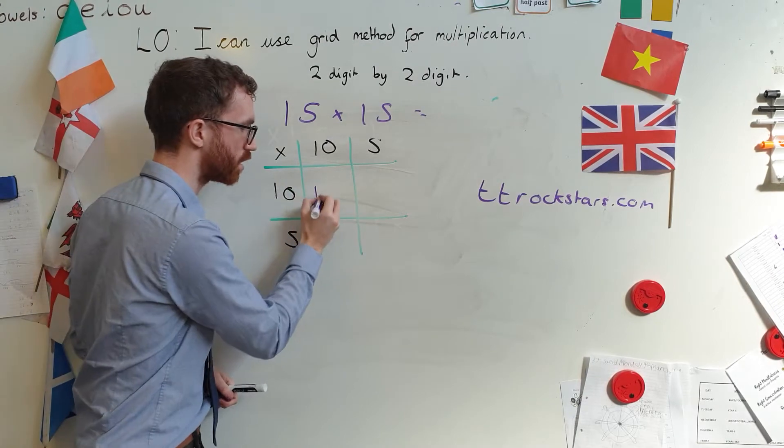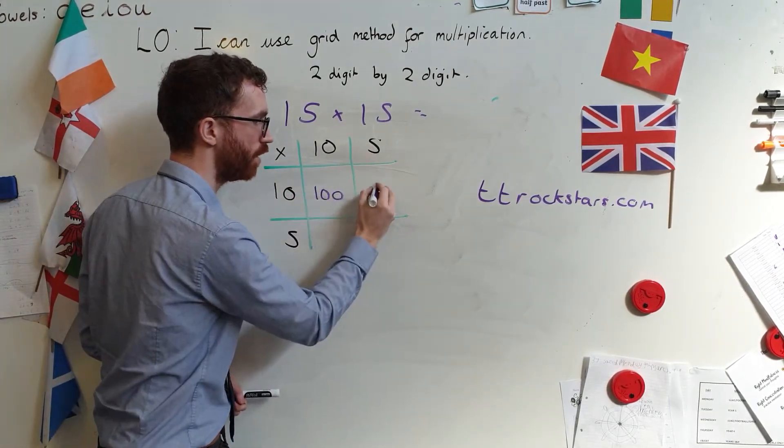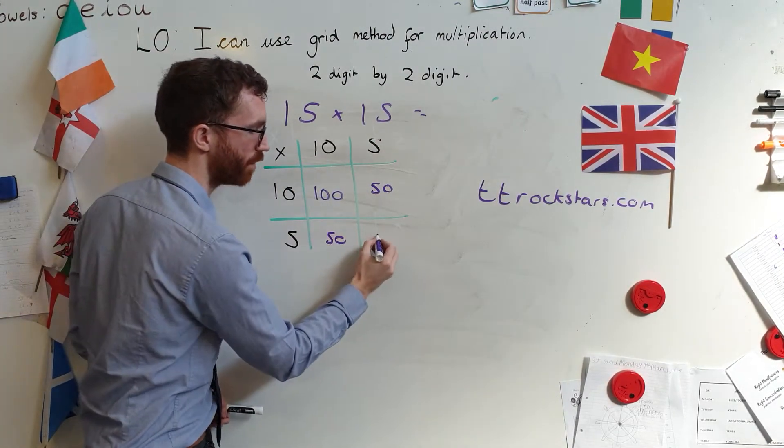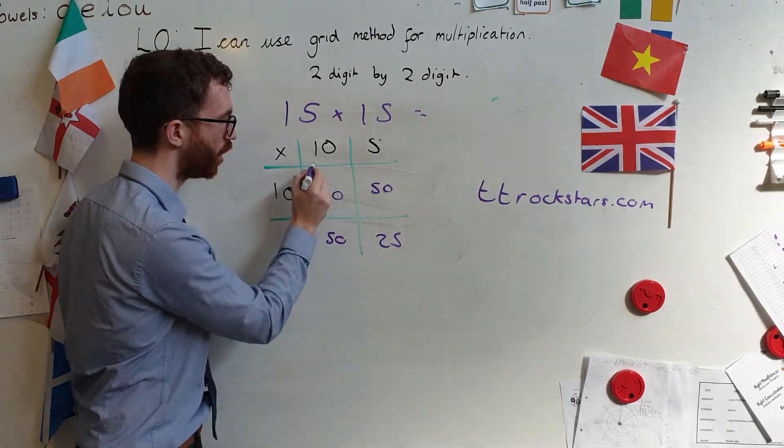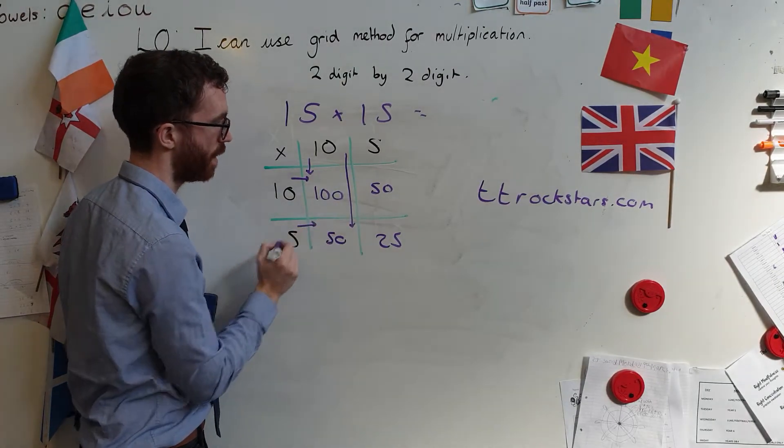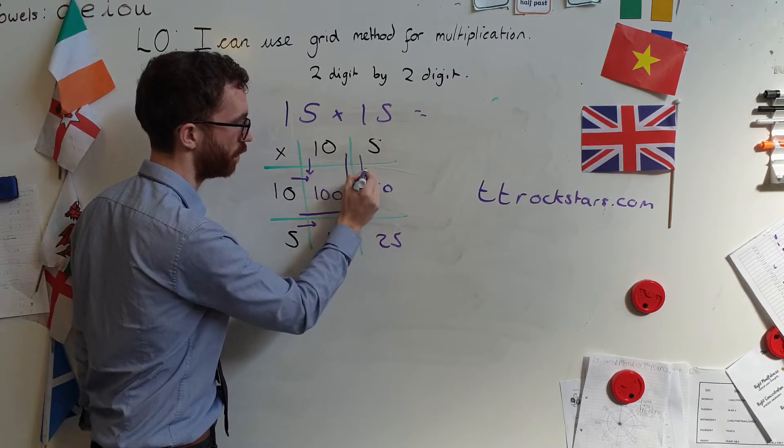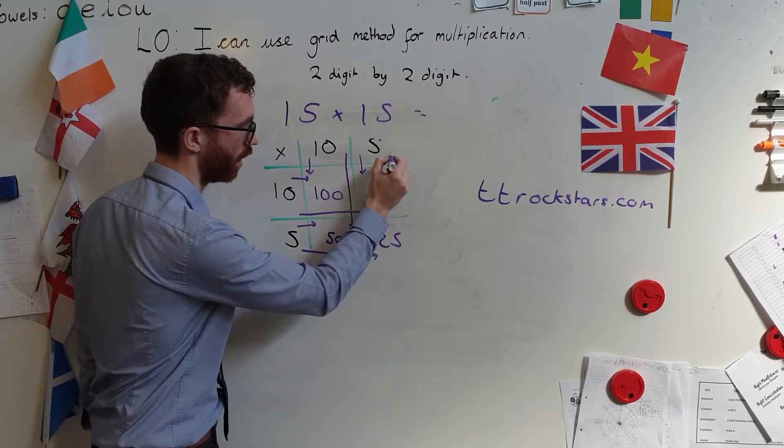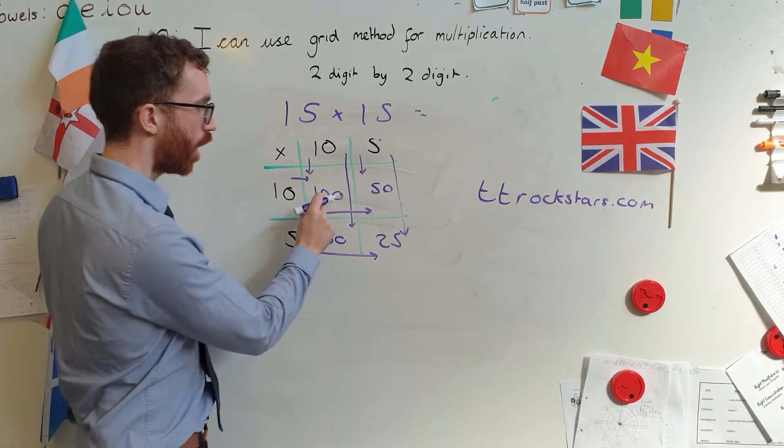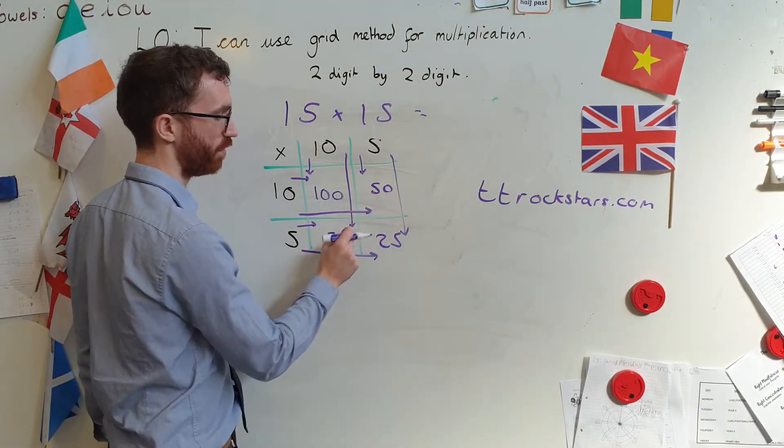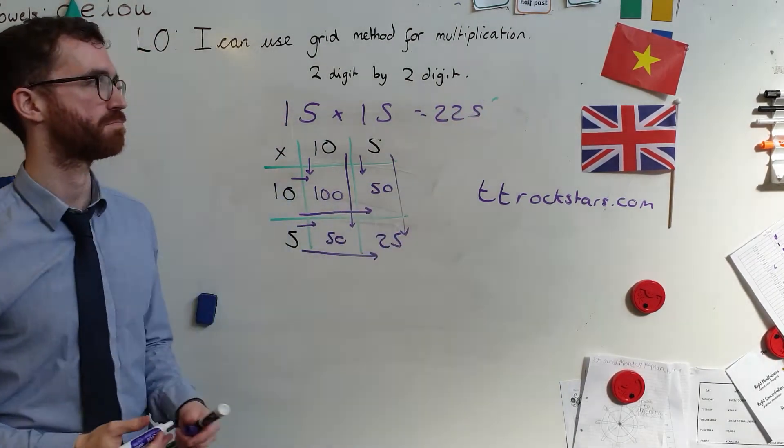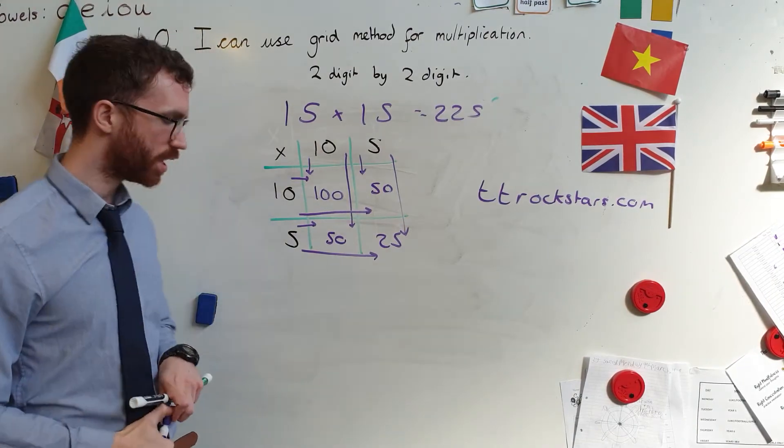10 times 10 is 100. 10 times 5 is 50. 10 times 5 is 50. 5 times 5 is 25. Can you see what I've done each time? I've done this times that. Then I did that times that. And I did this times that. And then I did that times that. I'm going along each time. It's starting to look a bit confusing now, isn't it? Oh, well. 100 plus 50 is 150. Plus 50, well, 50 and 50 is 100. So 100 plus 100 is 200. Plus 25 is 200 and 25. Right. That's what it looks like. Guess what? It's your time to have a go.